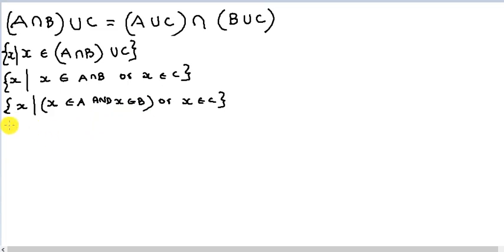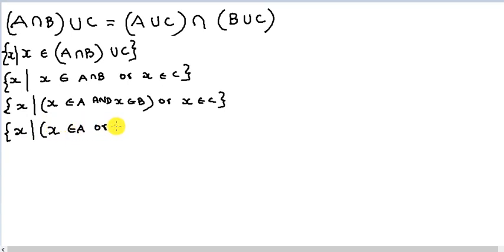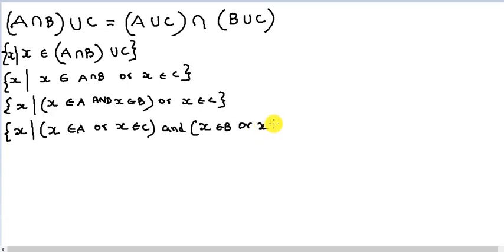That could be rewritten — you can expand it further. It means x belongs to A or x belongs to C, AND x belongs to B or x belongs to C. You may wonder how you can rewrite it this way.